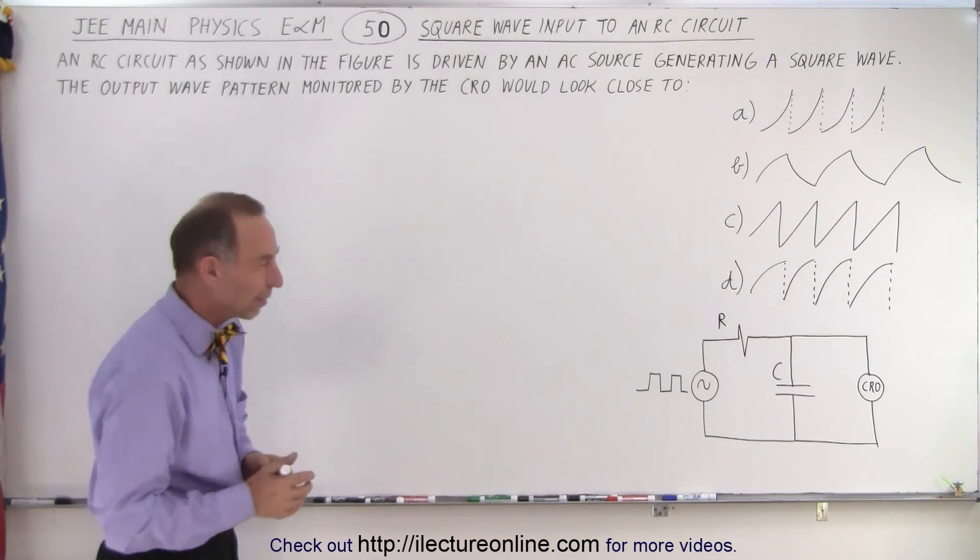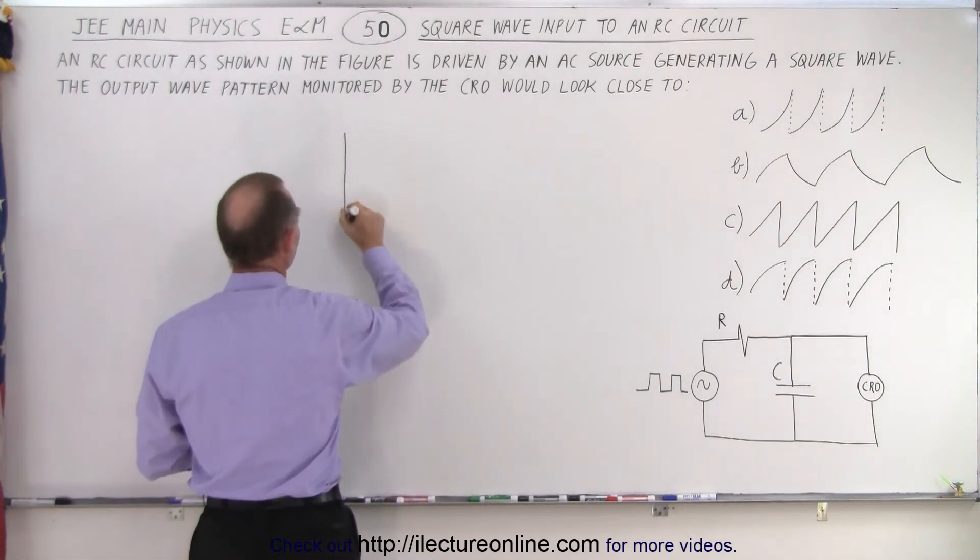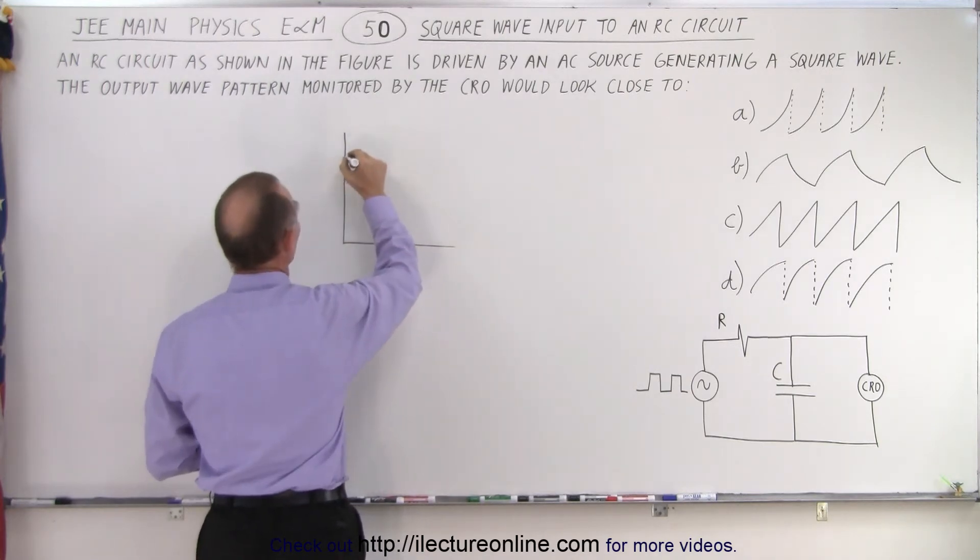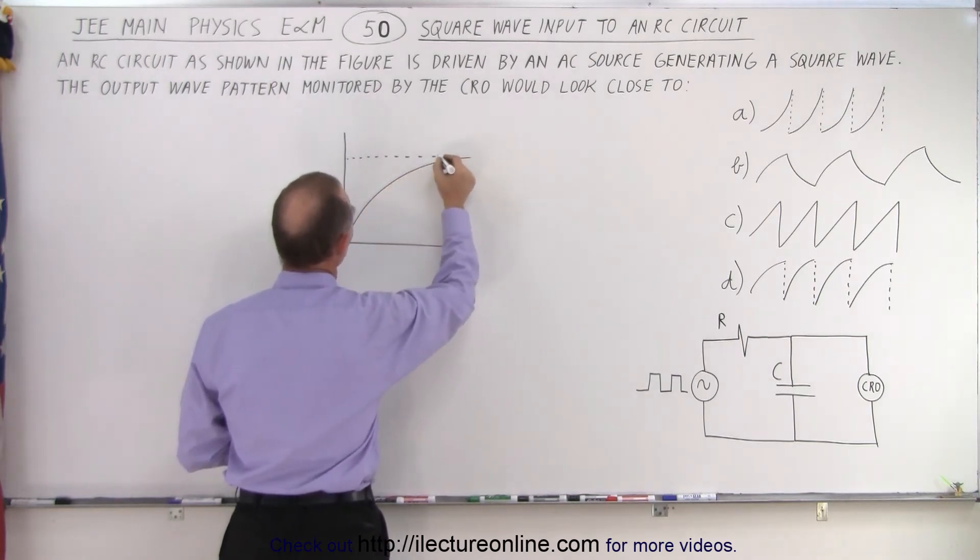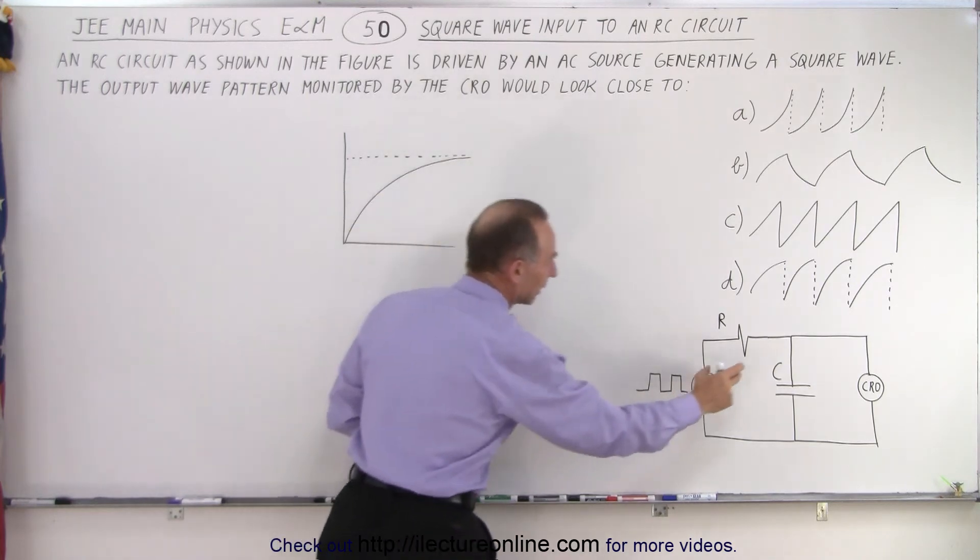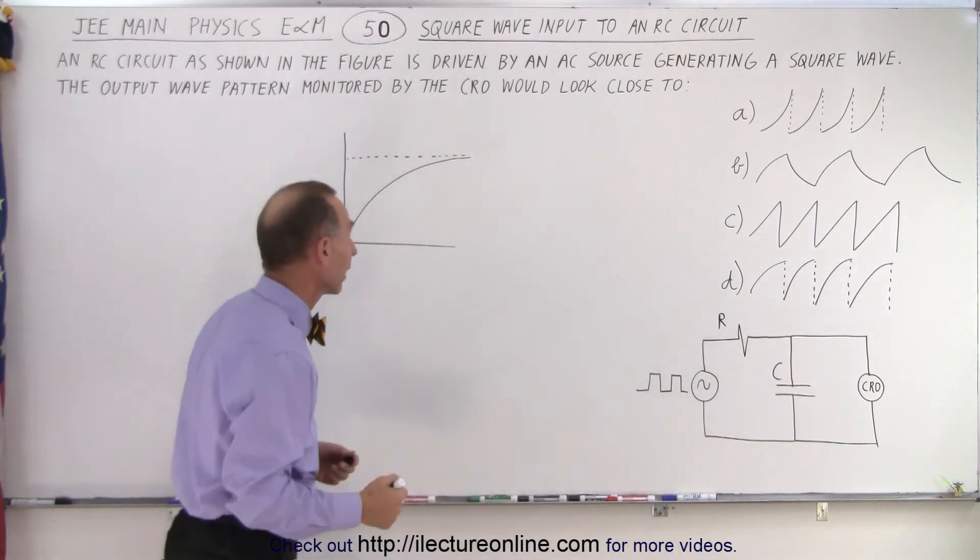So what does the charging capacitor look like, or at least the voltage across the charging capacitor? The voltage on the capacitor will charge like this. So if the input voltage suddenly jumps over here, then the voltage across the capacitor will increase until all the voltage of the source will be across the capacitor and not across the resistor because there will be no current flowing on that.